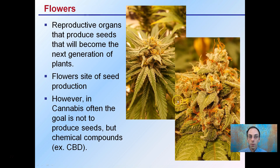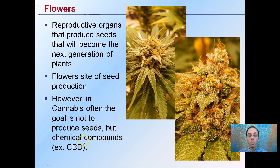Lastly, we have flowers. They're the reproductive organs that produce seeds that will become the next generation of plants, and of course flowers are the site of seed production. However, in cannabis the goal is often not to produce seeds but rather chemical compounds such as CBDs, THC, flavonoids, or terpenes. These flowers here are not producing seeds. Going through the process of cannabis cultivation, most growers are not looking to produce seeds — they're more interested in the chemical compounds that the plant can produce.